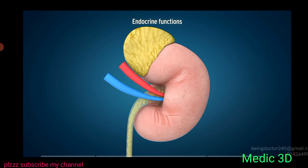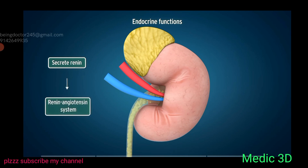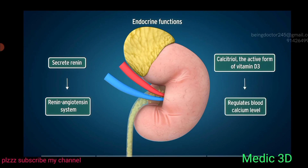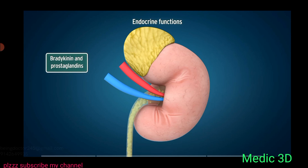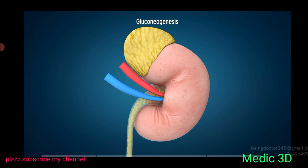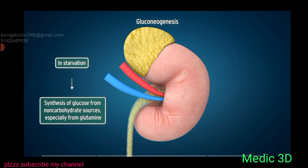The kidney also has important endocrine functions. In addition to erythropoietin, kidneys secrete renin — which activates the renin-angiotensin system — and also form calcitriol, the active form of vitamin D3, which regulates blood calcium levels. Bradykinin and prostaglandins are two local hormones secreted by the kidney that influence blood pressure regulation. Finally, although kidneys are not the primary site of gluconeogenesis, during starvation the synthesis of glucose from non-carbohydrate sources, especially from glutamine, occurs in these organs.